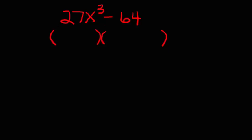First one is take the cubed root of the entire first term, including the coefficient of 27. So 3 times 3 times 3 is 27, that's the cubed root of 27. x times x times x is x cubed, that's the cubed root of x cubed.